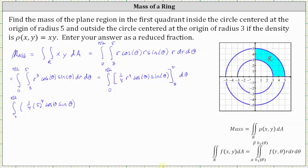When r is three, we have minus one fourth times three to the fourth power times cosine theta sine theta. Since one fourth times five to the fourth minus one fourth times three to the fourth equals 136, this simplifies to the integral from zero to pi over two of 136 cosine theta sine theta d-theta.